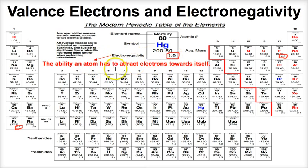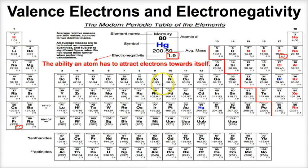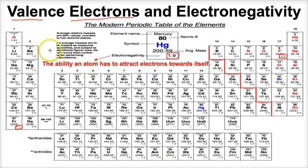But what does electronegativity mean? Electronegativity is the ability an atom has to attract electrons toward itself. Fluorine has a very strong ability to attract electrons toward itself, whereas francium and cesium don't have a good ability to attract electrons. This will come into play later when we determine whether a chemical bond is polar covalent, ionic, or nonpolar covalent. We can also use the periodic table to determine the number of valence electrons that atoms have.